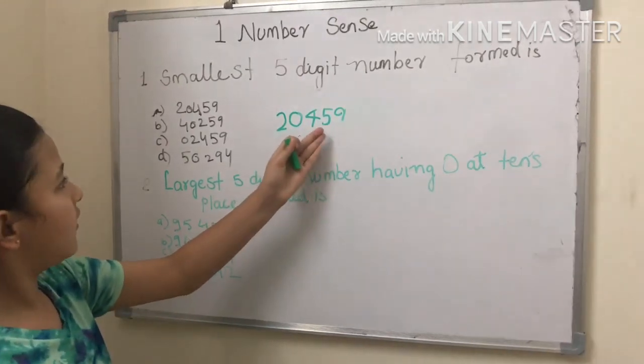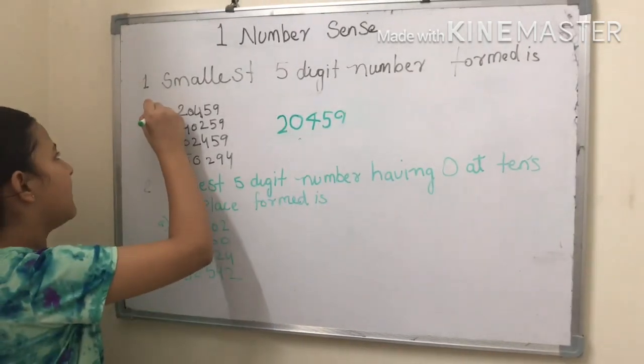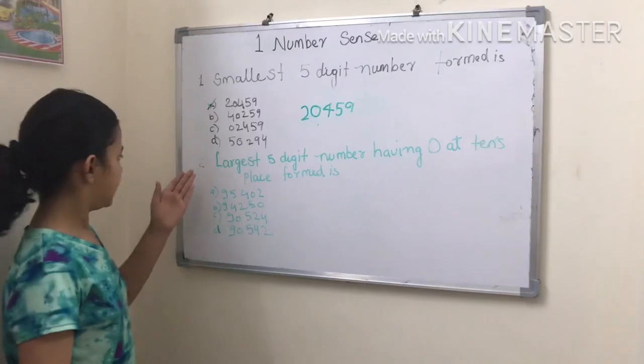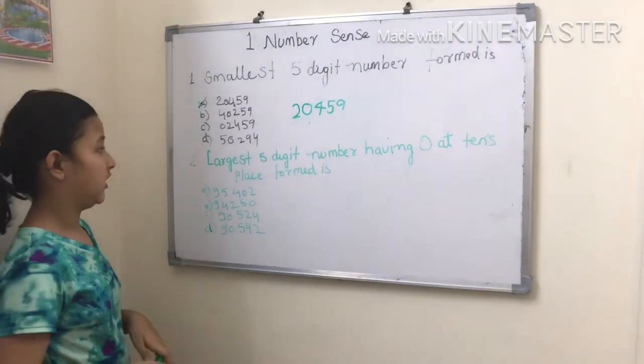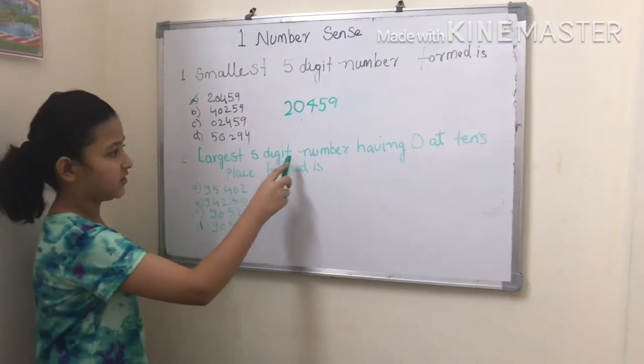Two, zero, four, five - so A is right. So guys, let's move on to the second question. Largest five-digit number having zero in tens place formed is...